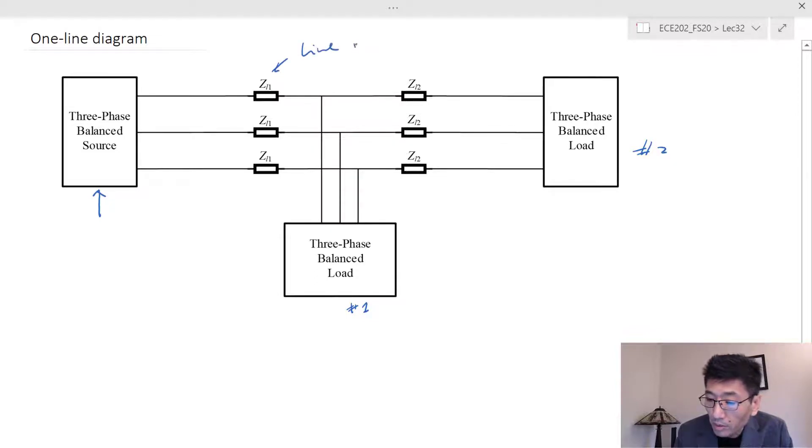I have two sets of loads. This is going to be the line impedance between the first node and the second set of nodes, and this is also the line impedance.